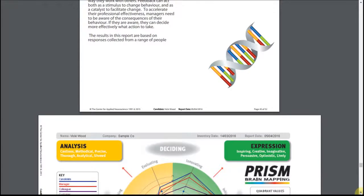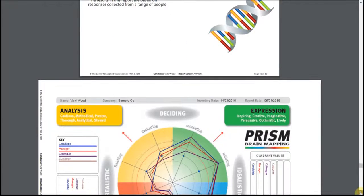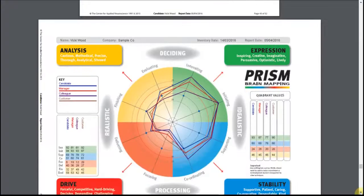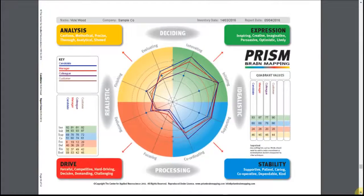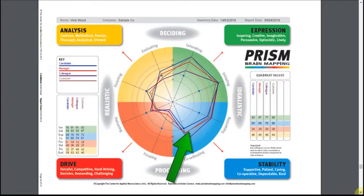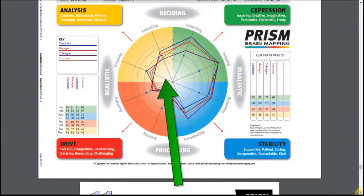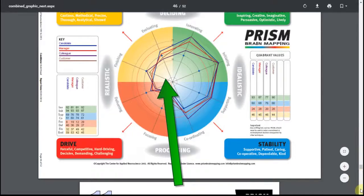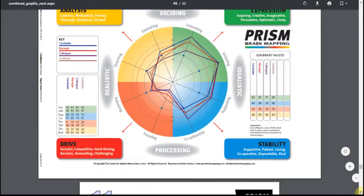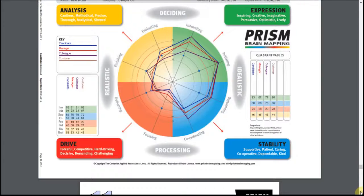The first page of this section introduces the 360 report and outlines the benefits of this process. The next page shows the normal PRISM map and shows the candidate's consistent line in blue, the observations from the manager in red and the observer groups. Our 360 feedback session contains two observer groups — colleagues and customer — shown in light brown and purple.